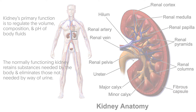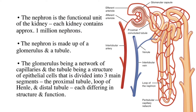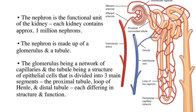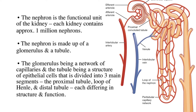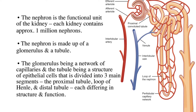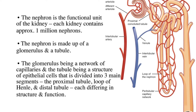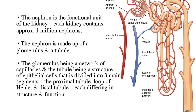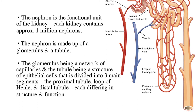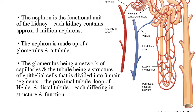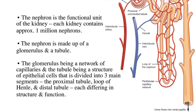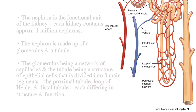The nephron is the functional unit of the kidney. The kidney contains approximately one million nephrons. The nephron is made up of a glomerulus and a tubule — the glomerulus being a network of capillaries, and the tubule being a structure of epithelial cells divided into three main segments: the proximal tubule, loop of Henle, and distal tubule, each differing in structure and function.